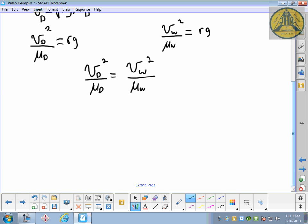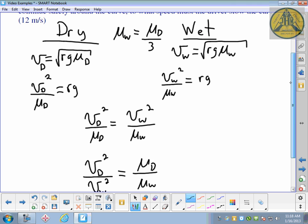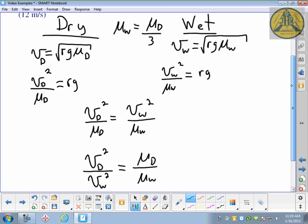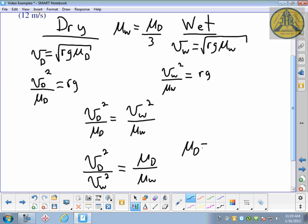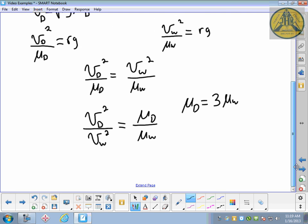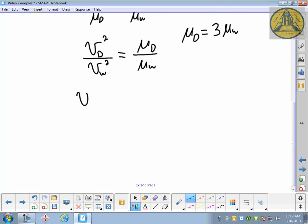We have to use the relationship between mu D and mu W now. I'm going to cross-multiply and put the velocities together on one side and the coefficients of friction together on the other side. Here's where we'll do our substitution. Mu W equals mu D over 3, so mu D equals 3 mu W. That's a little easier to substitute.